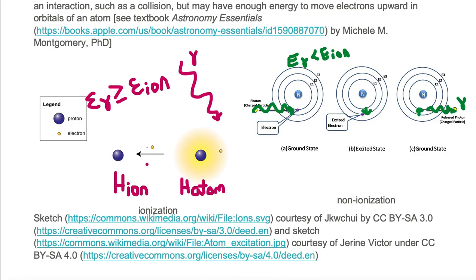After the interaction, we are left with a hydrogen ion, which is just a proton, and a free electron. The electron has energy. It travels in its own path and in its own direction.